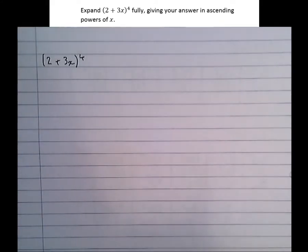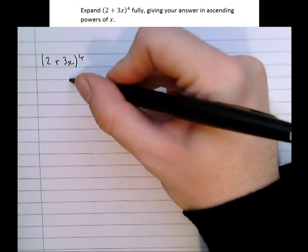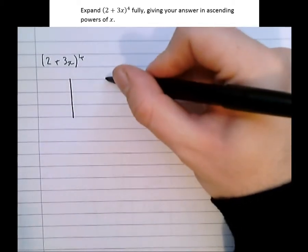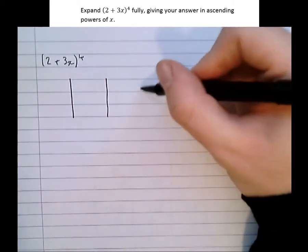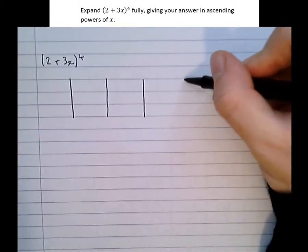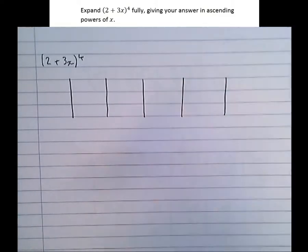I find it helps to lay this out in columns. There are 4 brackets, which is going to give us 5 terms in the end. So I'm going to set up 5 columns.